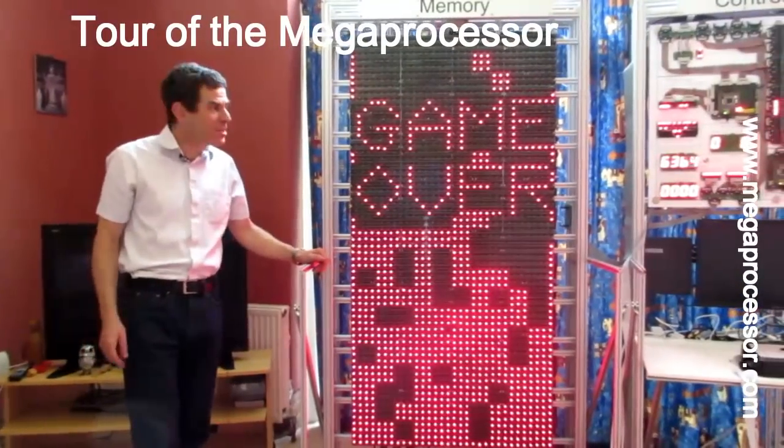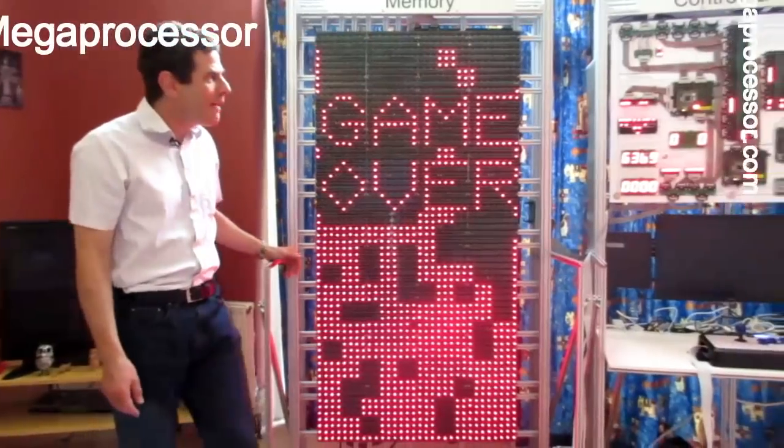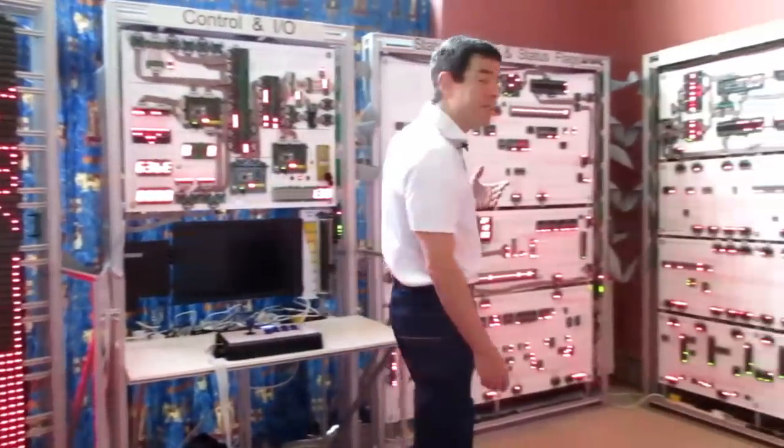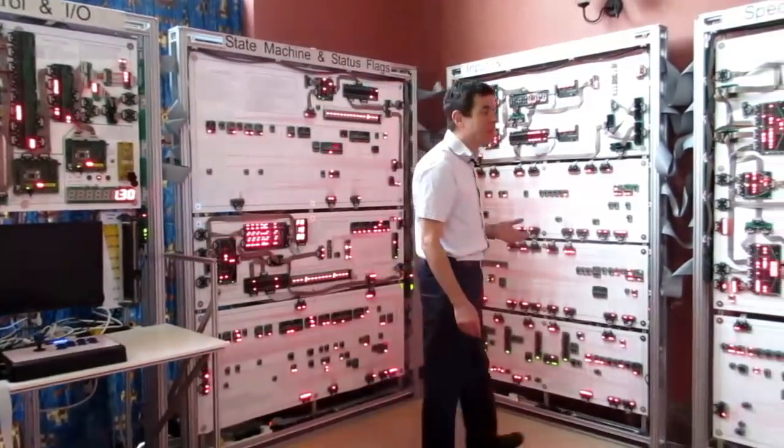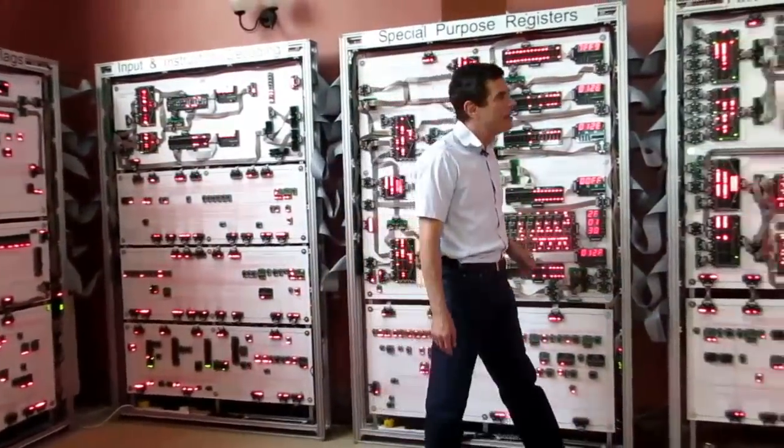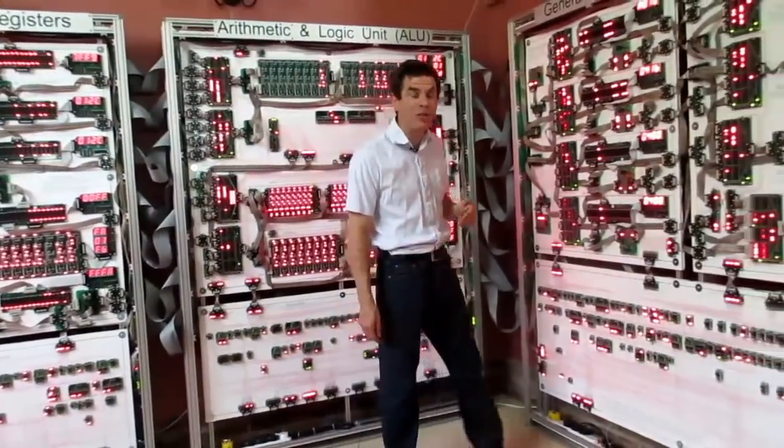Hello and welcome to the megaprocessor. It's finished, so I thought I'd take you on a little tour of it. It consists of around 40,000 transistors and about 10,000 LEDs. It's about 10 meters long and 2 meters tall, weighs about half a tonne, and burns about 500 watts of electricity.